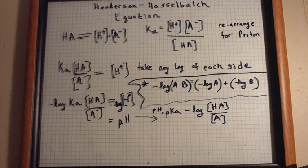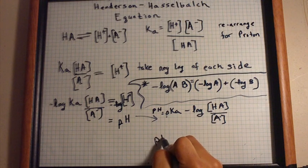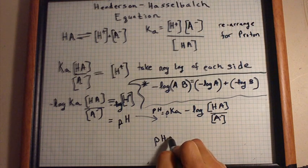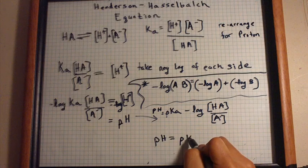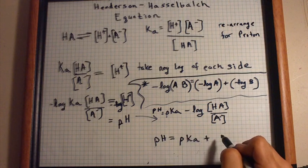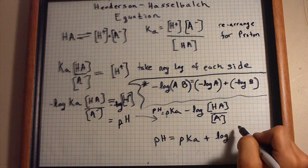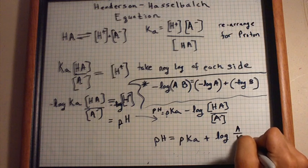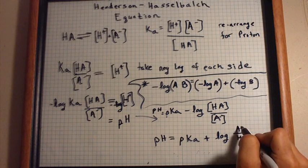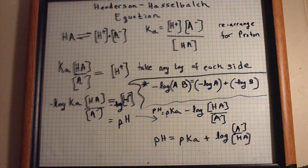Or you can just as easily say that pH is equal to pKa plus the log of A over HA, which is conjugate base over undissociated acid.